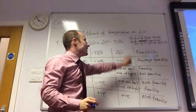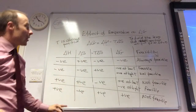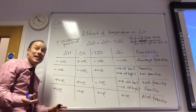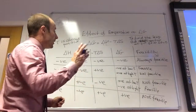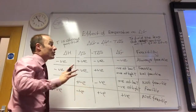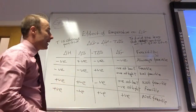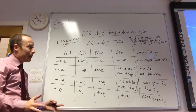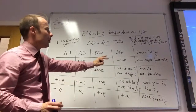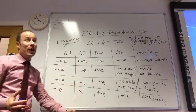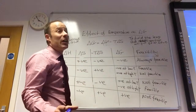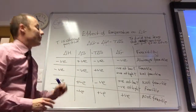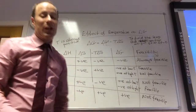Delta G tells you whether the reaction is feasible overall, but it tells you nothing about the rate of reaction — only whether it's thermodynamically reasonable for it to occur. It could be extremely slow. To find out about rate, you need to think about activation energy. A tricky example: you find a reaction is feasible, a student does it, it doesn't work — why not? The answer is the activation energy is too high and the rate is too slow. Delta G tells you nothing about rate.